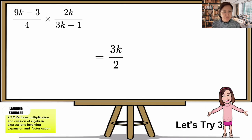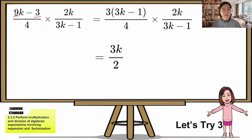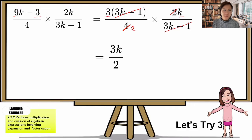The last answer for that set is 3k over 2. Now for the next question: 9k minus 3 — the common factor of 9 and 3 is 3, so we factorize the first fraction. The second fraction has no common factor, so we rewrite it as is. After factorizing, we simplify. Then 2 and 4 have a common factor of 2: 2÷2=1 and 4÷2=2. What's left on top is 3 and k, giving final answer 3k over 2.